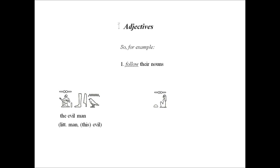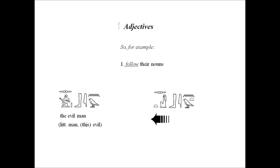You don't have to concern yourself with this type of literal translation — it's simply to show you how this is done. The female follows the same principle. By adding the adjective bin, it now becomes binet. The adjective follows the female and is translated as the evil woman, also literally as woman, this evil.